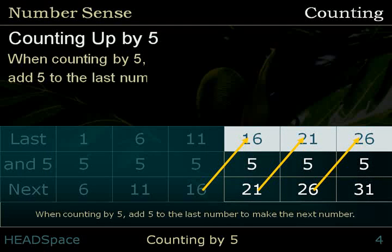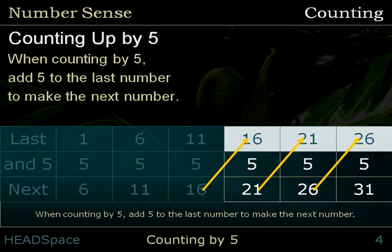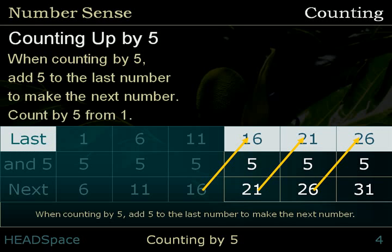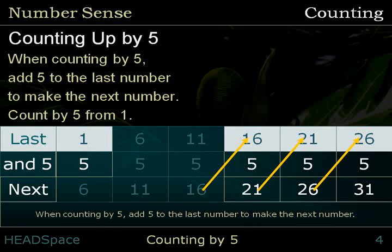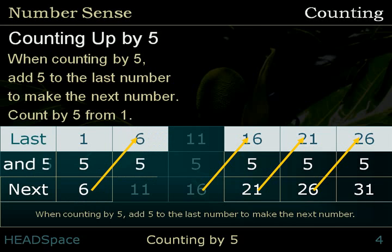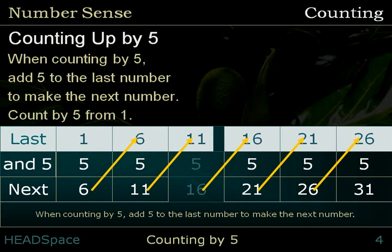When counting by 5, add 5 to the last number to make the next number. Count by 5 from 1. Last number: 1. And 5. Next number: 6. Last number: 6. And 5. Next number: 11. Last number: 11. And 5. Next number: 16.